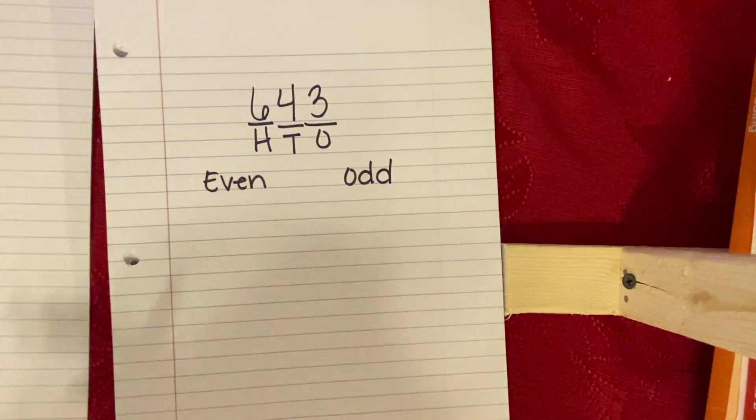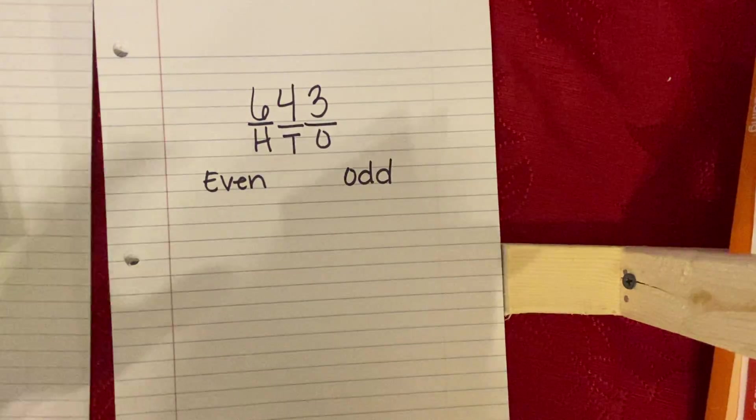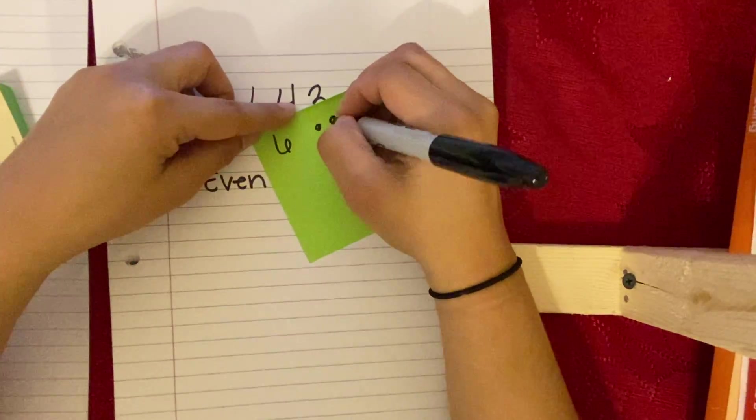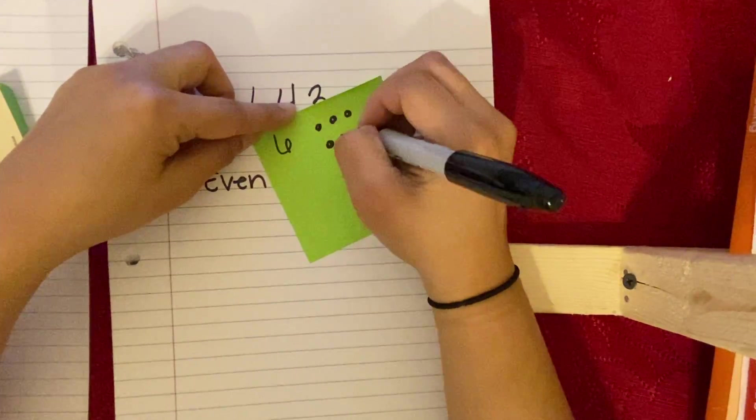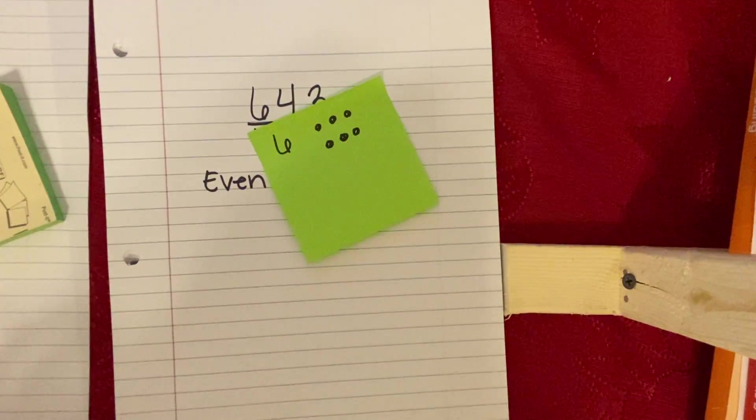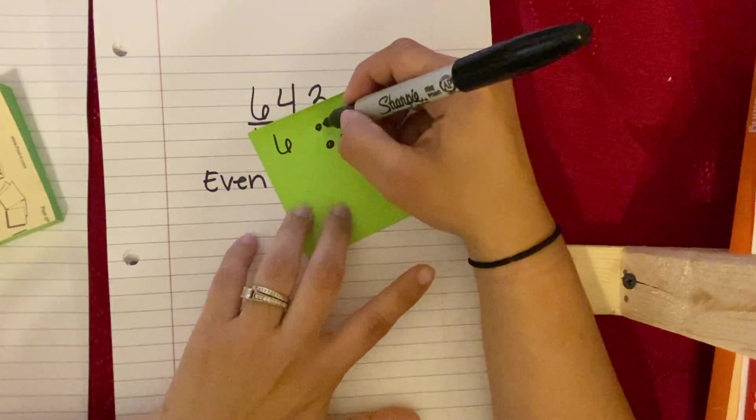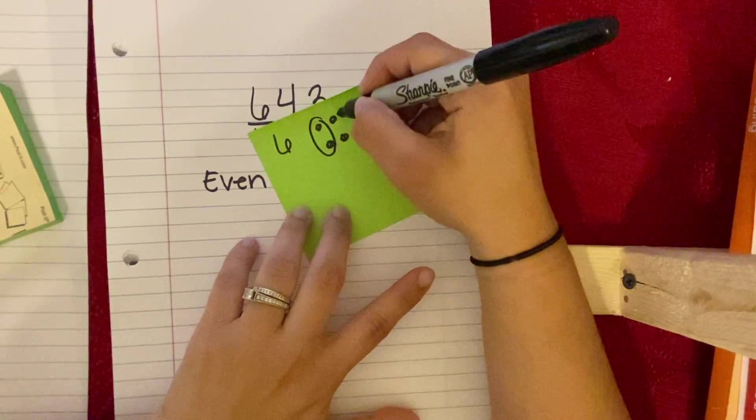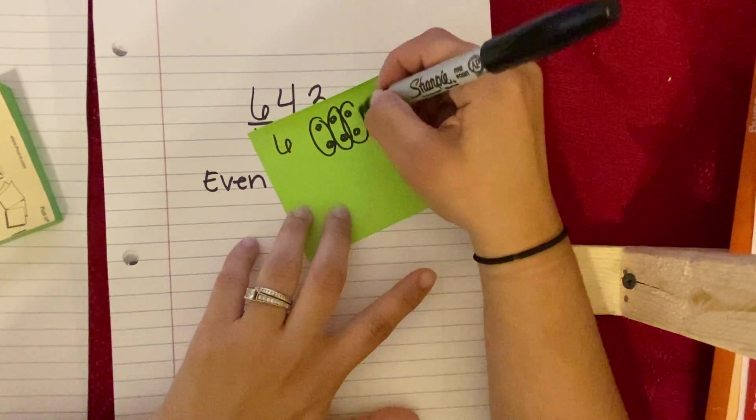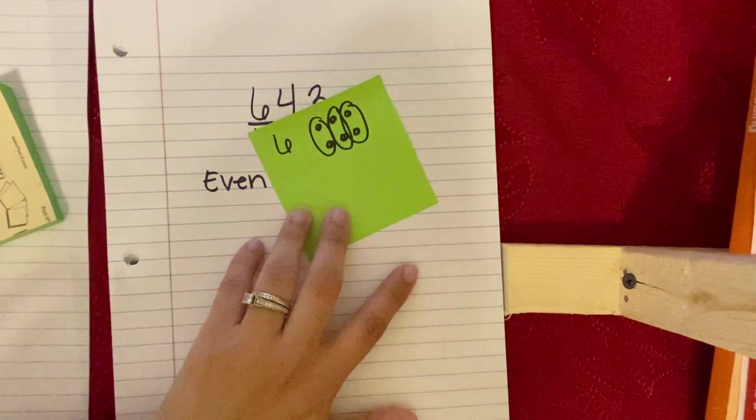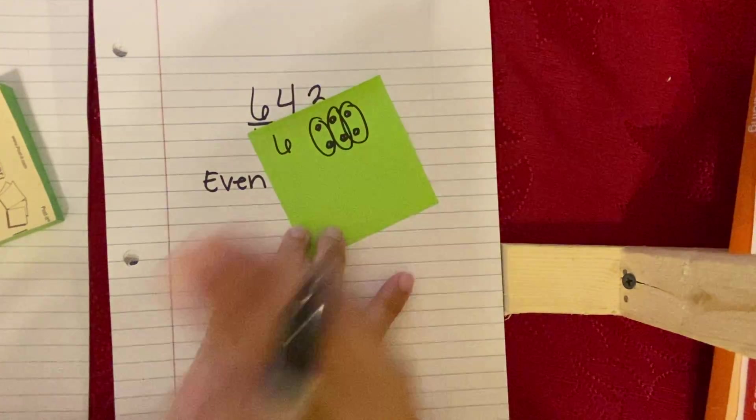So if I have an example here, I have the number six. One, two, three, four, five, six. Can I divide that into two equal groups? Yes, I can. Two in this group, two in this group, two in this group. I could even do the threes and the threes. Can that be divided equally? Yes.